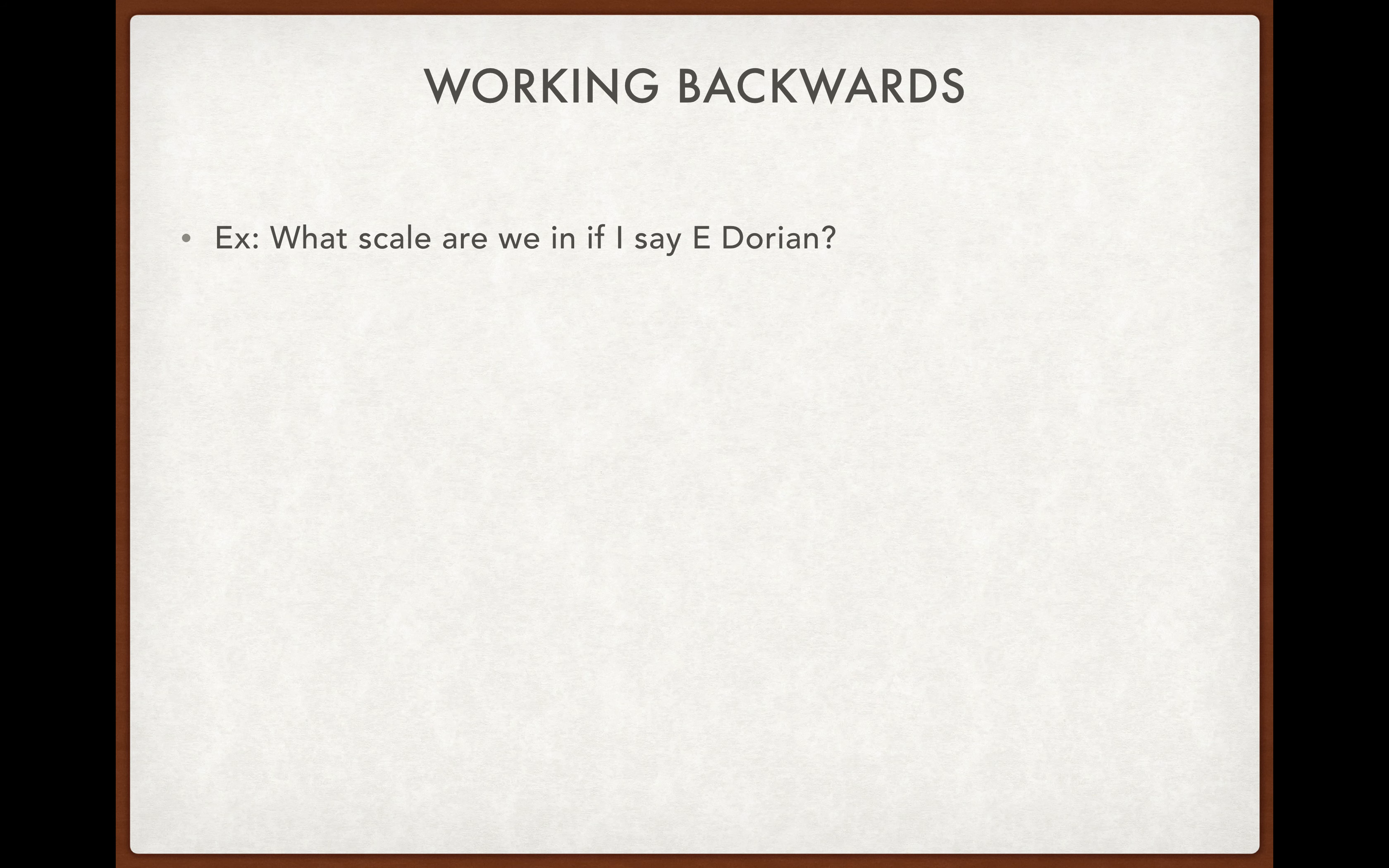Now we know how to apply this to scales. How do we work backwards? For example, what scale are we in if I say E Dorian? Well, Dorian is the second mode. Ionian is the scale that the mode is from, which means we count backwards one from E.